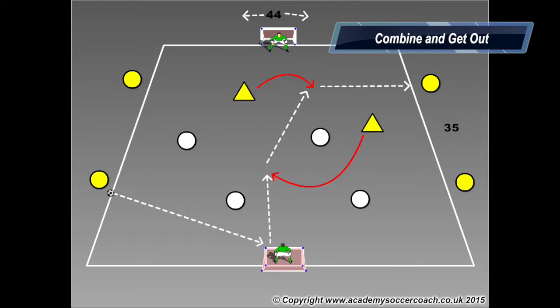Start simply with the yellow team plus the goalkeepers attempting to keep the ball. The yellow team scores by completing one pass in the centre and then playing it out to a different side that they received it from. If the white team wins the ball, they can score on any goal.